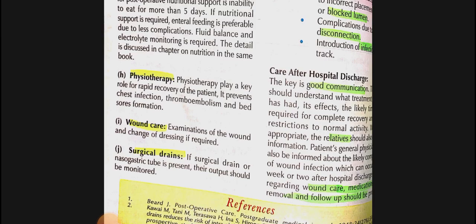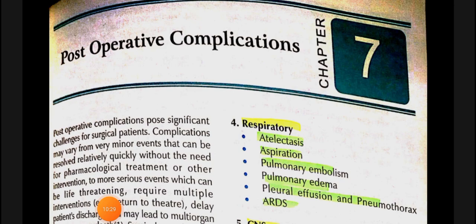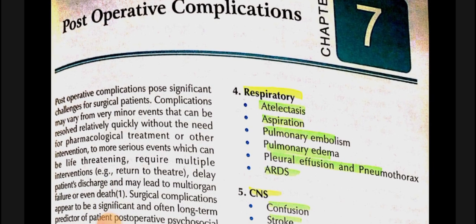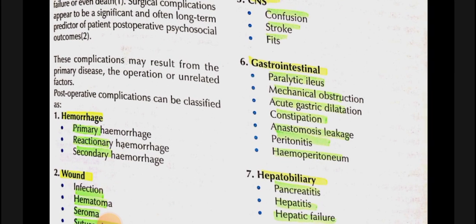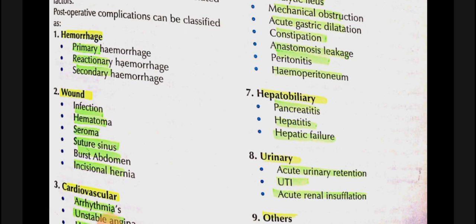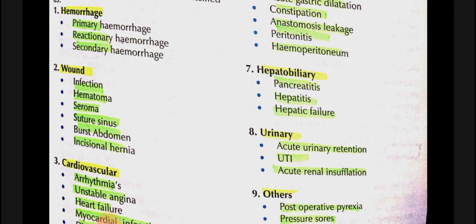Chapter 7 covers post-operative complications. If complications arise, the patient may need to return to the operation theater, have a prolonged hospital stay, or in severe cases develop multi-organ failure or even death. Post-operative complications are classified as: hemorrhage (primary, secondary, and reactionary), and wound complications such as infection, hematoma, seroma, sinus, burst abdomen, and incisional hernia.